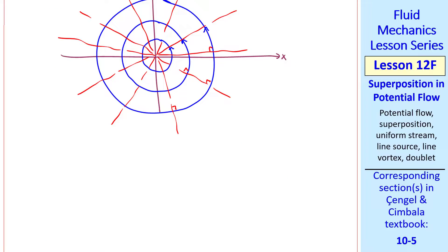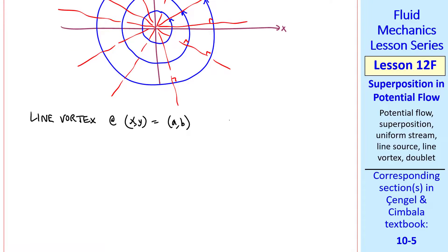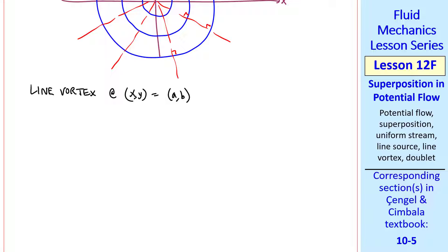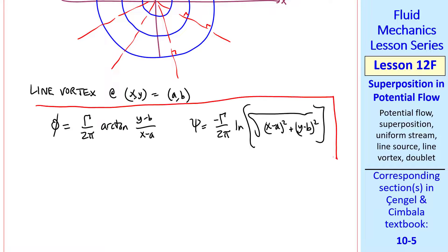These equations are for a line vortex at the origin. At some other location, AB, we do a similar shift in origin as we did with the source, and we get these equations, which again are very similar to the previous ones for a source, but the psi and the phi are switched, and there's also a negative sign, because of the definition of psi.